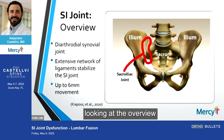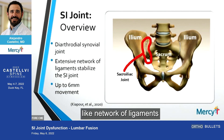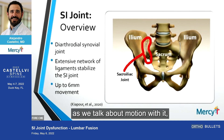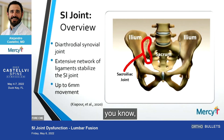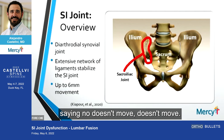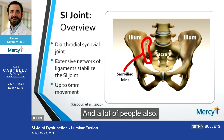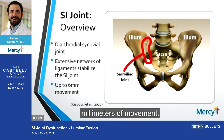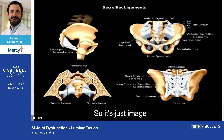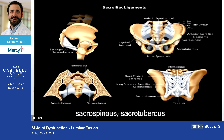Looking at the overview of this joint, you know it has an extensive network of ligaments that stabilize the SI joint. As we talk about motion with it, initially everybody was saying it doesn't move, but that has been disproven — it has been shown to have up to really six millimeters of movement. Looking at the sense of ligaments, the sacral spine, sacral tuberous, and the anterior sacral ligaments overall.